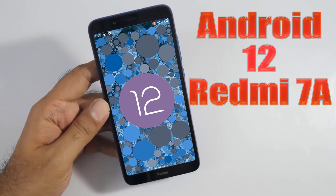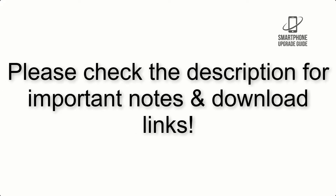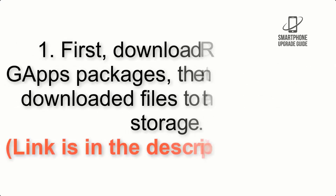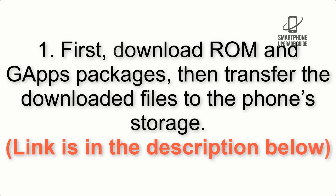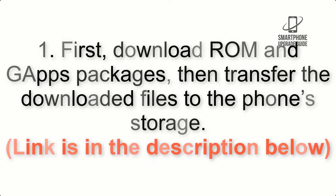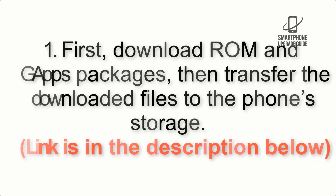Install Android 12 on Redmi 7a via Lineage OS 19.1. Please check the description for important notes and all the download links. First, download the ROM and GApps packages, then transfer the downloaded files to the phone storage. Link is in the description below.